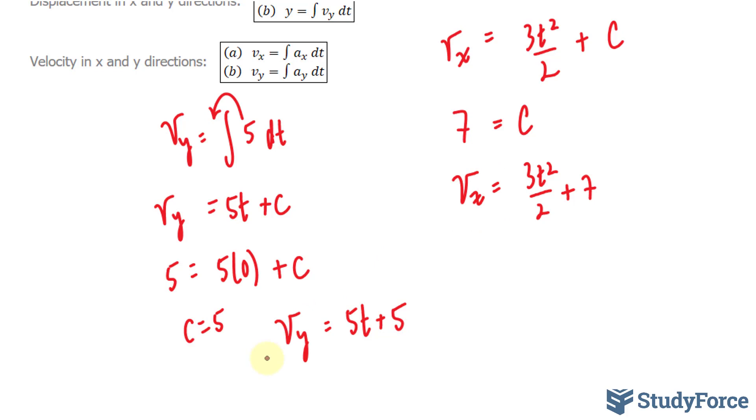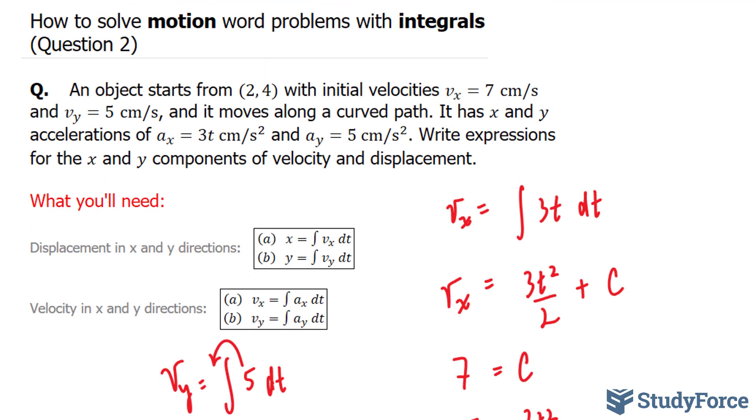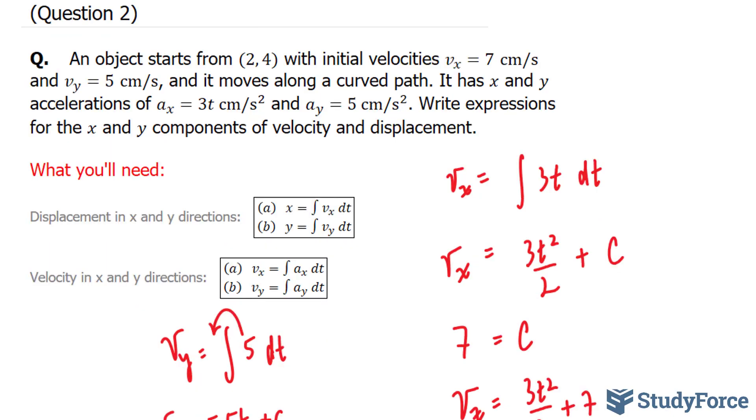Now that we have our v_x and our v_y, we can do the same thing using this property to obtain our x and y. So if I take the integral of v_x and take the integral of v_y, I end up with my x and y. And after I obtain my x and y, I can substitute the point (2, 4) when t equals 0 to obtain the complete equations for displacement.